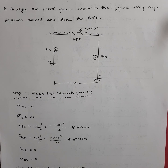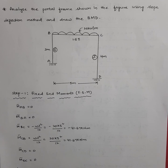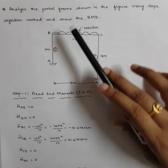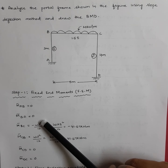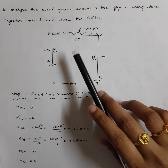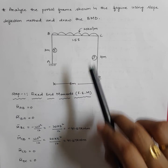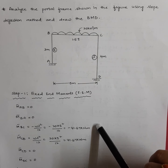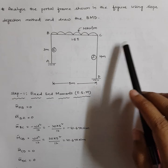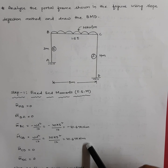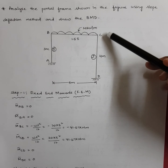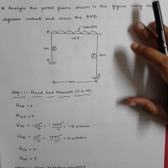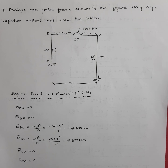The first step in the slope deflection method is writing the fixed end moments. M-bar AB is zero because there is no load on AB. M-bar BA is also zero. M-bar BC, since it has a UDL, is minus WL²/12, which gives minus 20×5²/12 = minus 41.67 kN·m. M-bar CB is plus 41.67 kN·m. M-bar CD and M-bar DC are both zero as there is no load on CD.